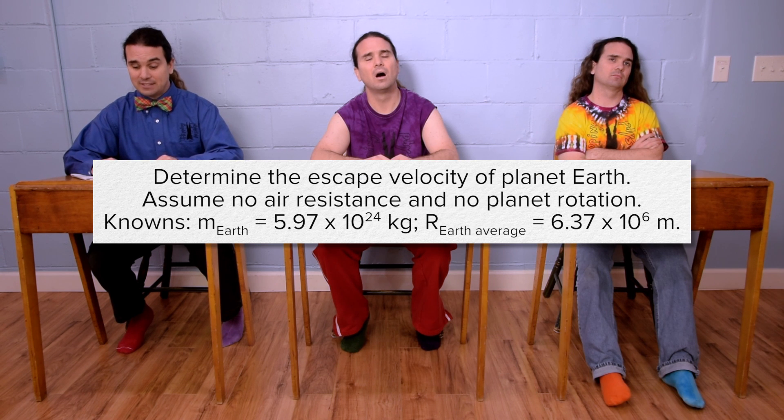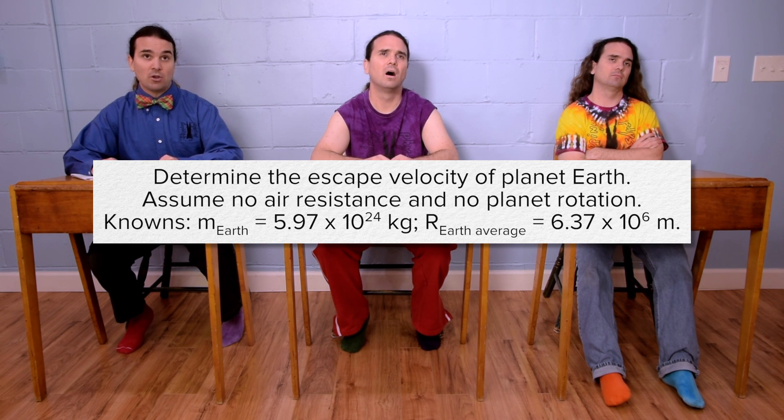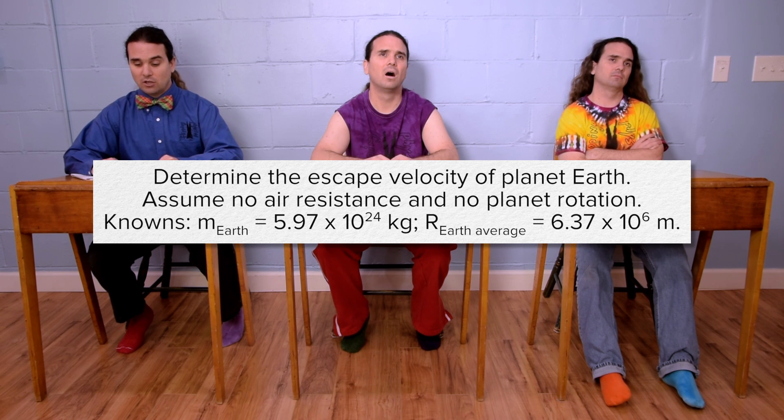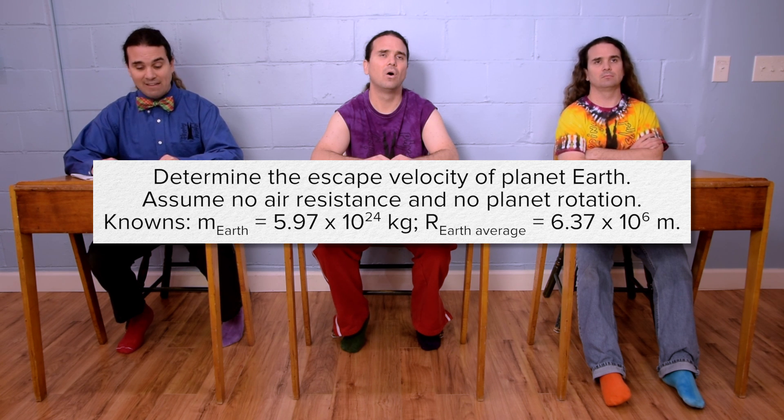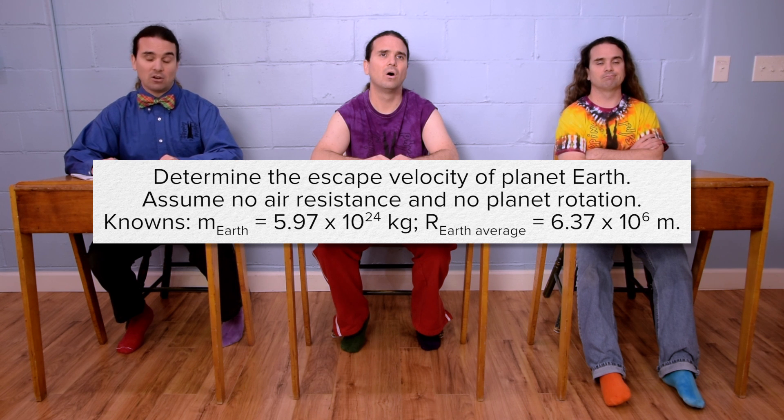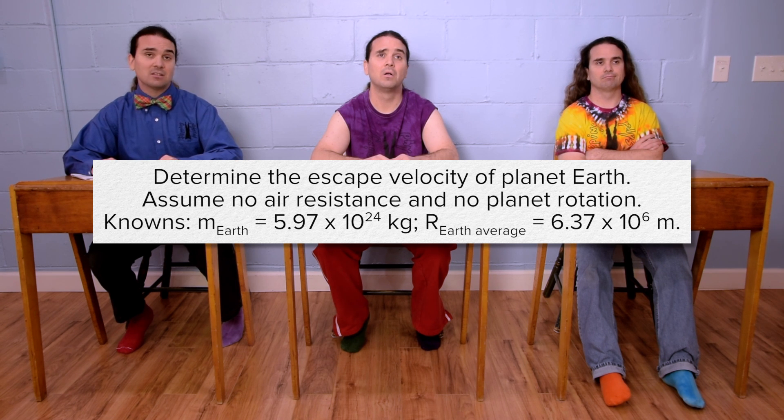Determine the escape velocity of planet Earth. Assume no air resistance and no planet rotation. Your knowns are the mass of the Earth is 5.97 times 10 to the 24th kilograms and the average radius of the Earth is 6.37 times 10 to the 6th meters.